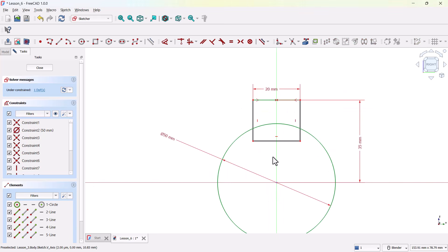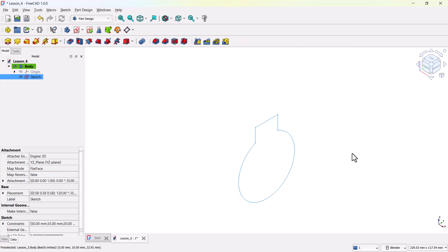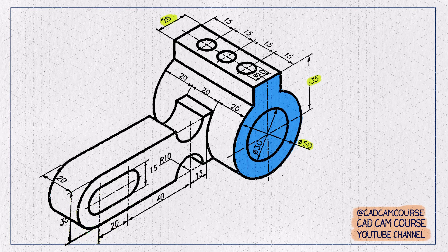Now select the Trim Edge tool and clean up this sketch to trim the extra lines. The sketch is now turned green, means it is fully constrained. Close the sketch, exiting to the Part Design Workbench. Step one is completed.